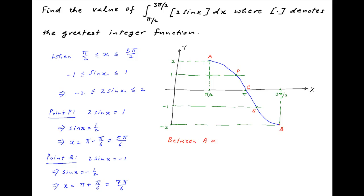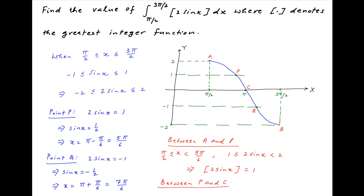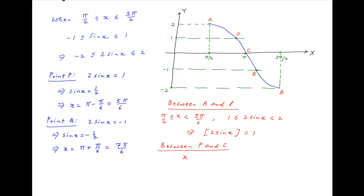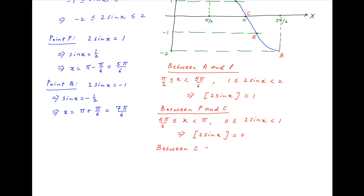Between points a and p, where x lies between π/2 and 5π/6, the value of 2 sin x is greater than or equal to 1 and strictly less than 2, and therefore the integral part of 2 sin x is equal to 1. Between points p and c, where x lies between 5π/6 and π, the value of 2 sin x is greater than or equal to 0 and strictly less than 1. Between points c and q, where x lies between π and 7π/6, the value of 2 sin x is greater than or equal to minus 1 and strictly less than 0, and therefore the integral part of 2 sin x is equal to minus 1.